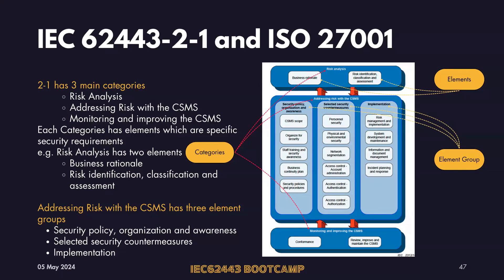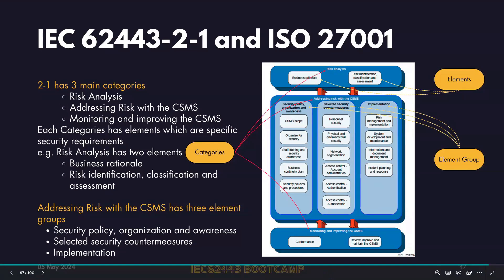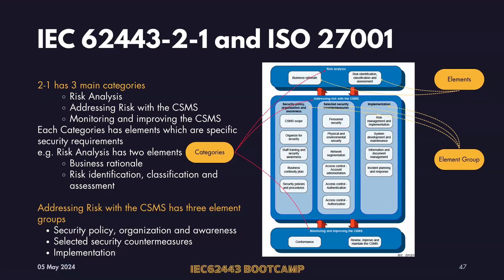Under addressing risk through CSMS, the first element group is security policy, organization, and awareness — focusing on personnel security, the overall management system, business continuity, and defining policies for access control, change management, risk management, and business continuity. There is also an element group on selecting security countermeasures — giving people awareness, physical security, network segmentation, access control, user matrices, authentication, and authorization mechanisms — and then implementing those countermeasures through risk development, maintenance, documentation, and incident response.